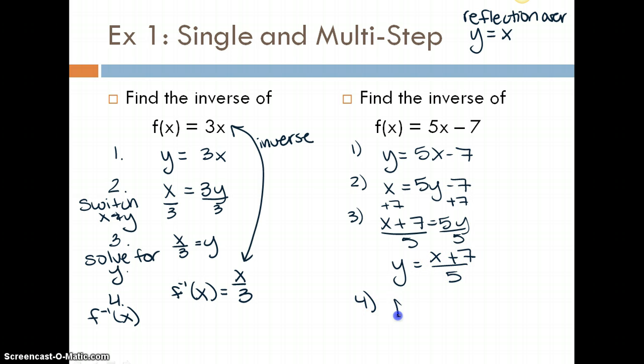The final step is to change it to the f inverse. So f inverse of x = (x + 7) divided by 5. The inverse symbol is a negative 1 as an exponent. So it's not technically the same concept as what you guys are used to with negative exponents, it's just saying that the function is the inverse of the original.